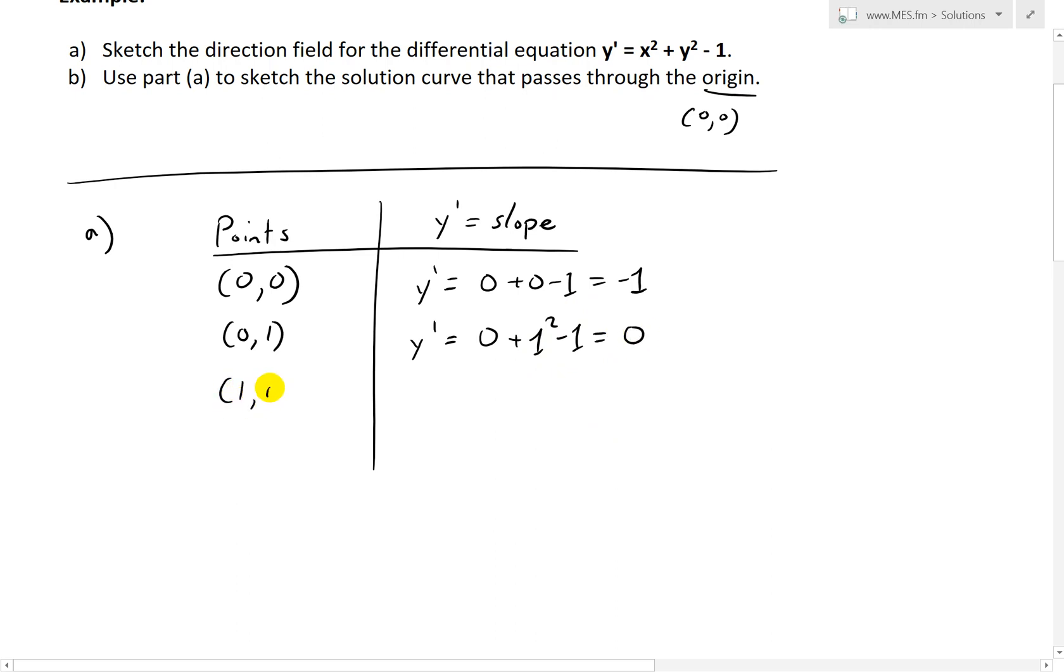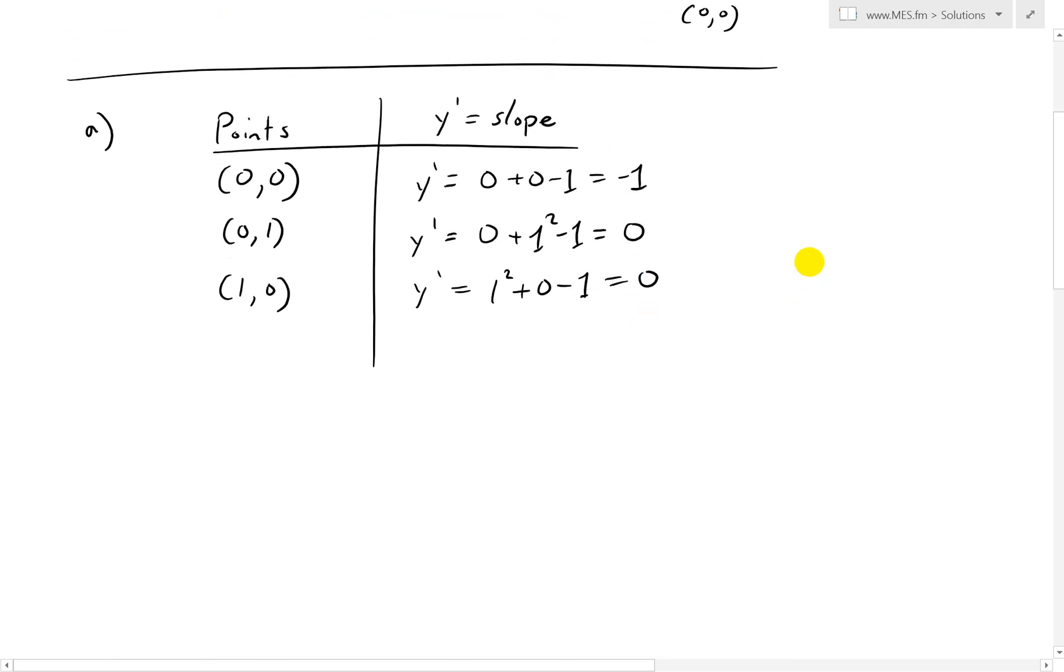And similarly, (1, 0), y' equals 1² + 0² - 1 = 0. Let's look at a more complex one: (0, 2). At this point, we'll have zero for the x, and then the y is two, so 2² - 1. So this is 4 - 1, that equals 3. So it's a steeper slope.